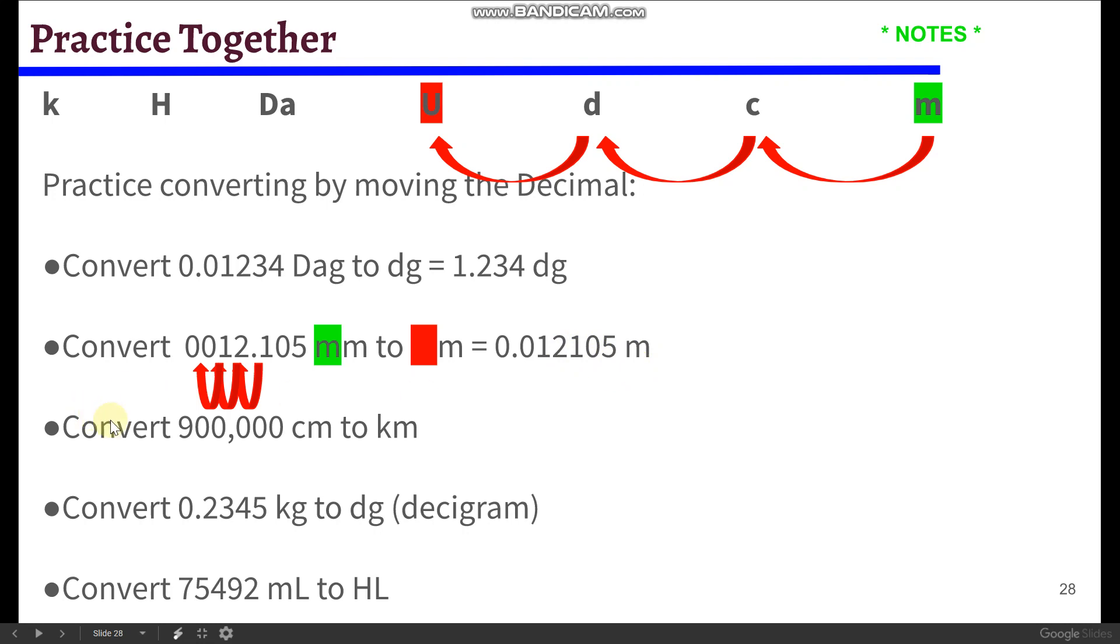Next, you guys should practice converting 900,000 centimeters to kilometers, 0.234 kilograms to decigrams, and you're going to convert 75,492 milliliters to hectoliters. So go ahead, pause the video, take some time to practice that. Then in a minute here, we're going to go over those answers.